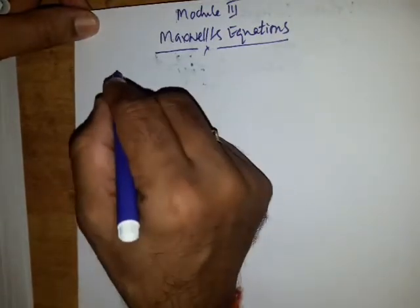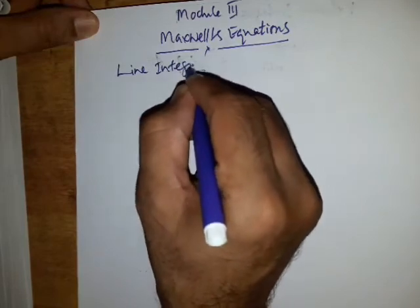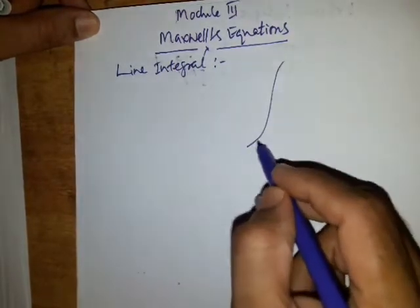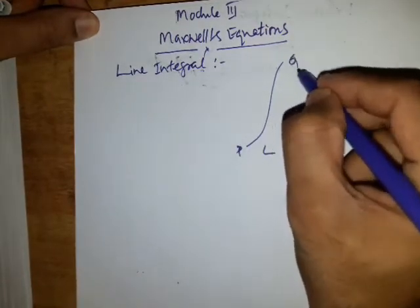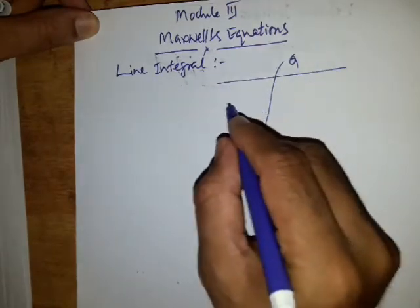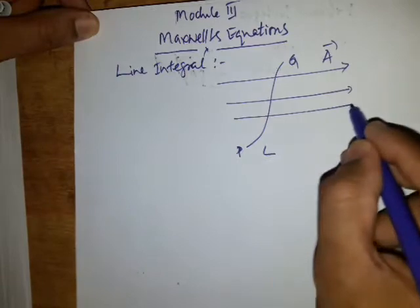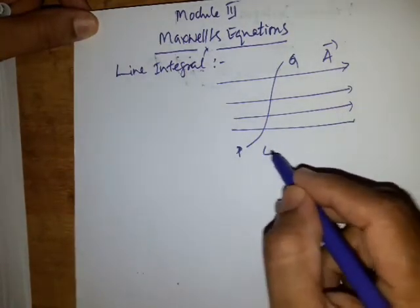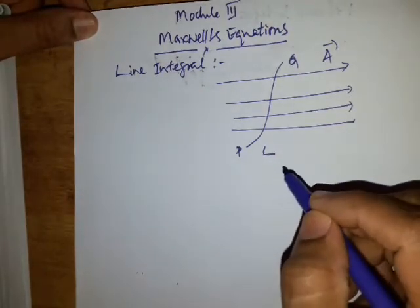I will start with the line integral. So let us consider a length L from P to Q in a vector field A. So this is a vector field of A. And this length is consisting of small elemental lengths DL.